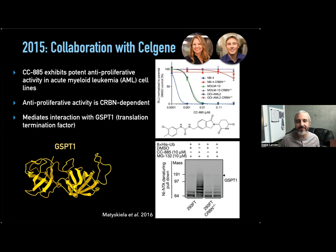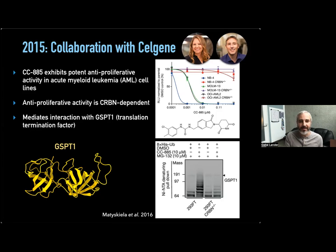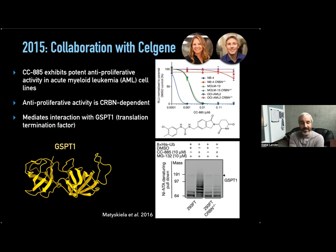How did I get involved in the molecular glue field? This started in 2015 when former postdoc colleague Mary Mataskella joined the team at Celgene. We established a collaboration along with Phil Chamberlain at Celgene to use cryo-electron microscopy to study the interaction between cereblon, DDB1, and GSPT1 — a protein they were targeting for degradation — mediated by the drug CC-885. They found it had a decent effect in treating myeloid leukemia cell lines.